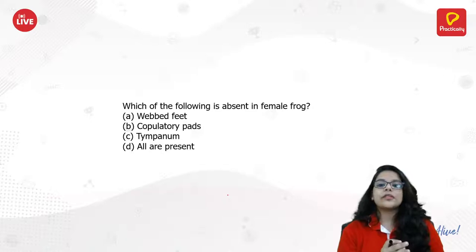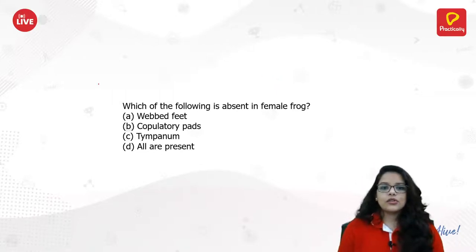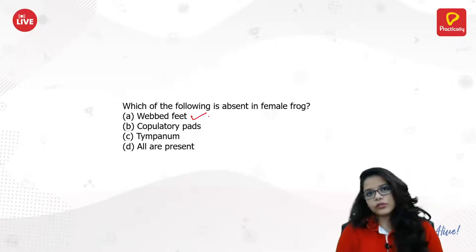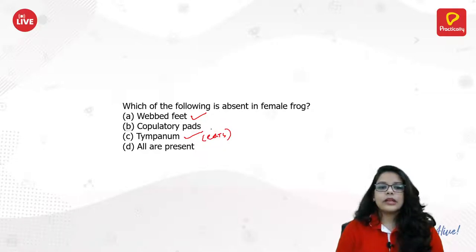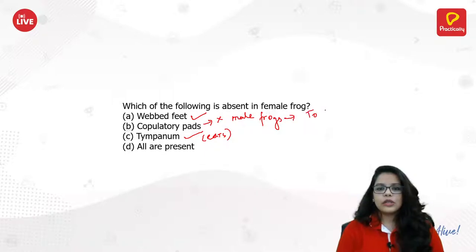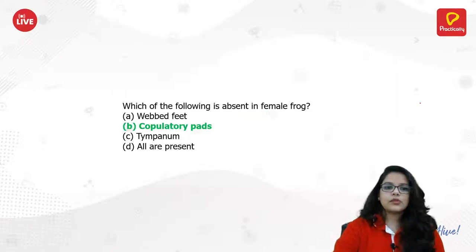Practice question: Which of the following is absent in a female frog? Webbed feet are present in both males and females. Tympanum is also present in both. But copulatory pads are present only in male frogs — they are absent in female frogs. So the answer is copulatory pads.